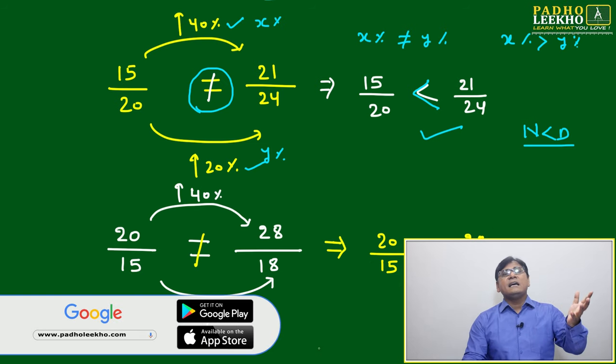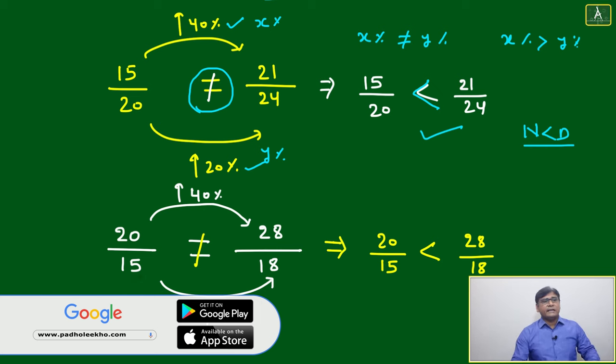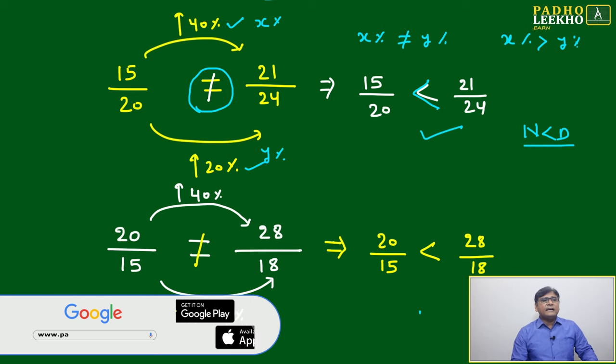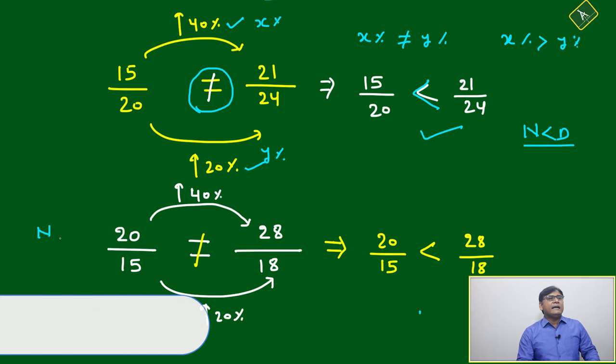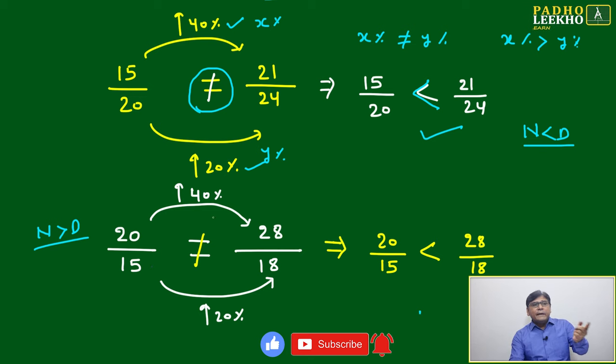This is the case where n is greater than d. 20 by 15. We have made it 28 by 18. That's a 40 change here and 20 change there, similar to the previous ratio.